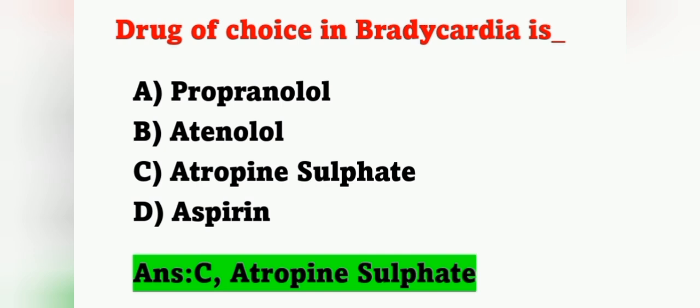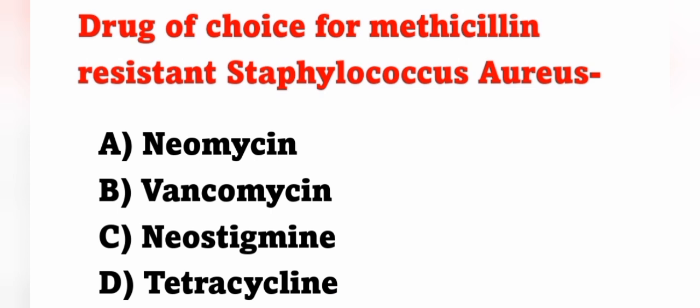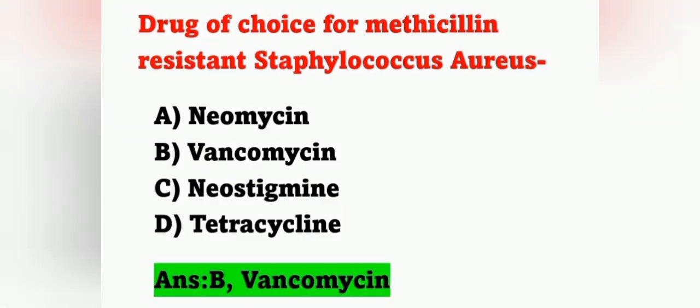Next question: drug of choice for methicillin-resistant Staphylococcus aureus (MRSA) infection is — option A: neomycin, option B: vancomycin, option C: neostigmine, option D: tetracycline. The correct answer is vancomycin, option B.